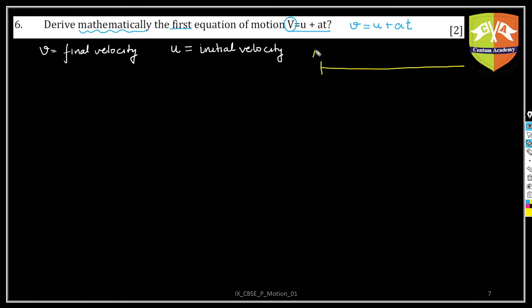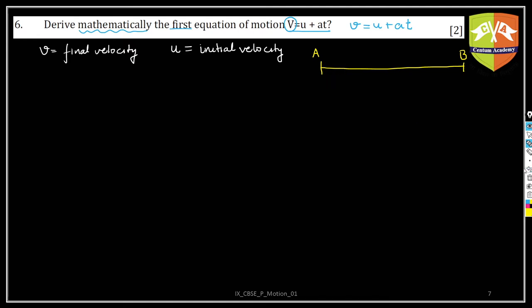Let's say this is the starting point — your home — and this is the final end point — your school. This is not a practical case because there is no straight line motion between A and B in a city. But let's draw a straight line and assume you are flying an aircraft from A to B horizontally.